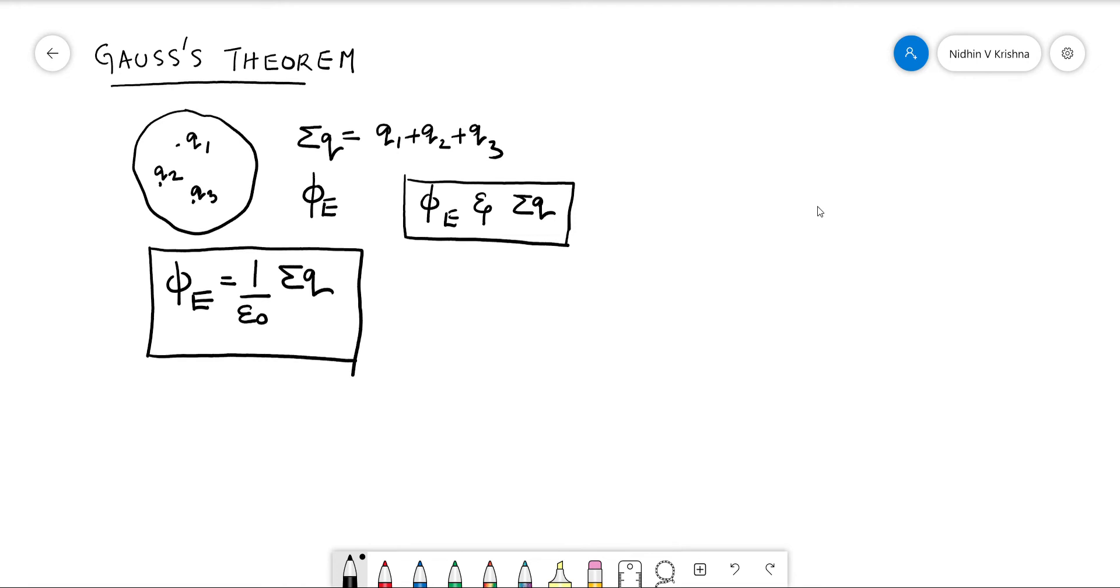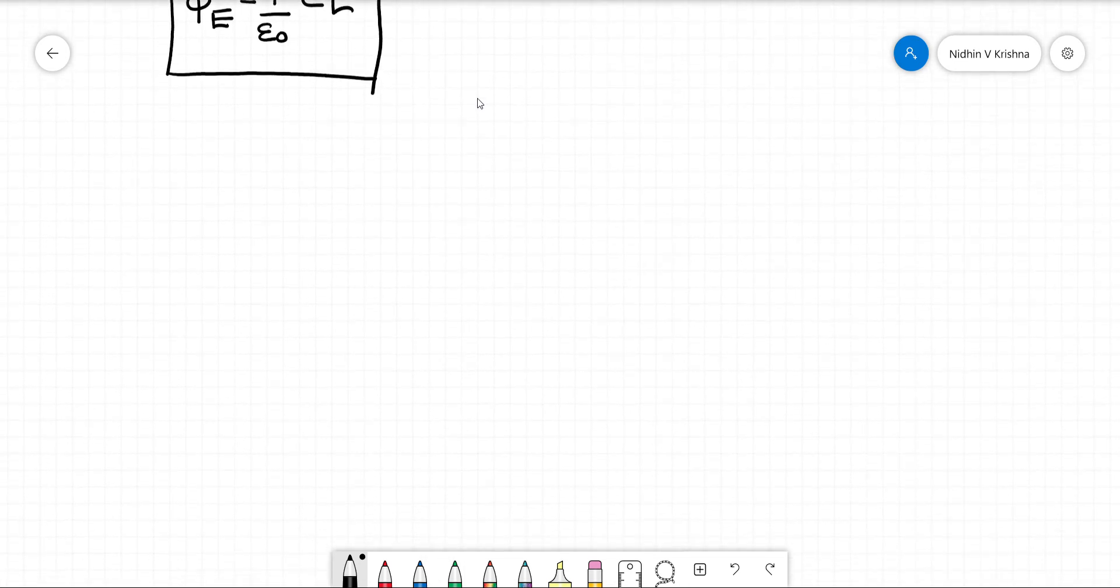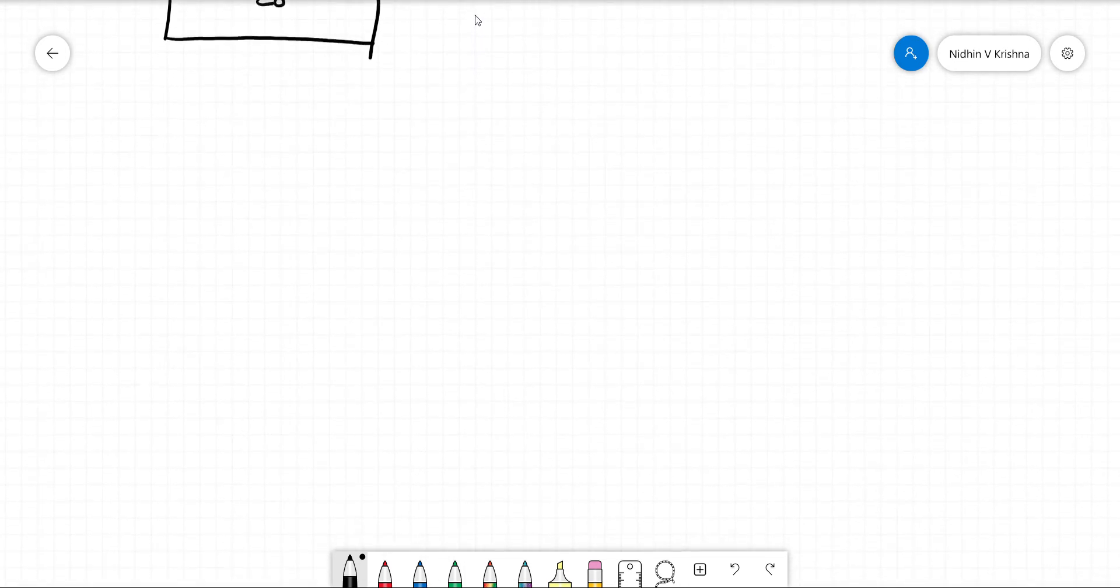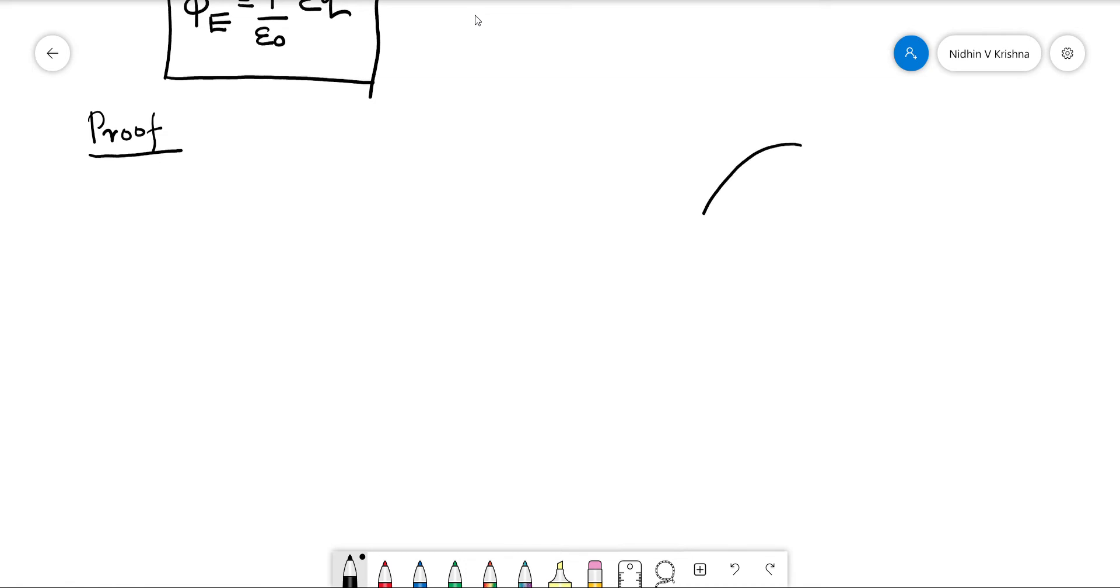Okay, now we are going to prove this. So here comes the proof of Gauss's theorem. The proof. So this is what we are going to do - we are going to consider a spherical Gaussian surface.